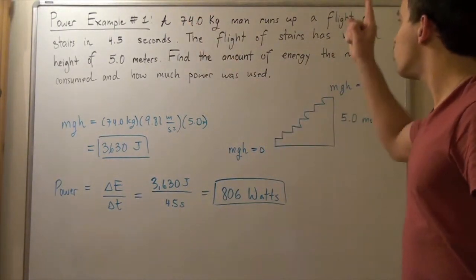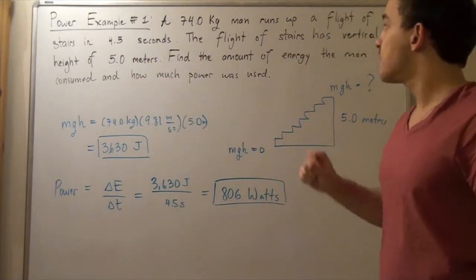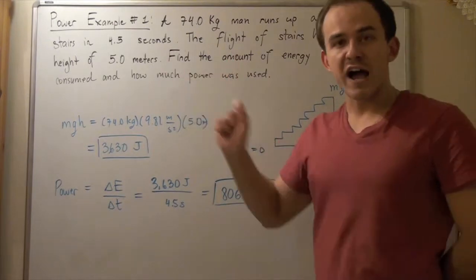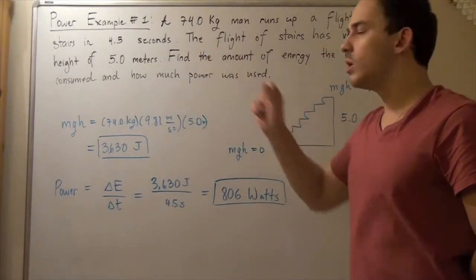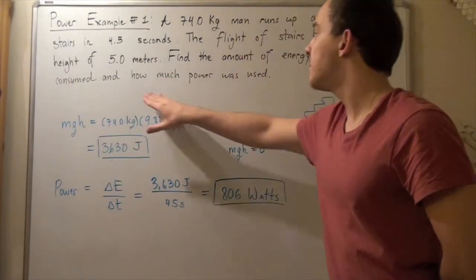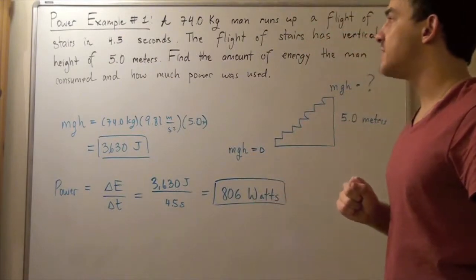A 74-kilogram man runs up a flight of stairs in 4.5 seconds. The flight of stairs has a vertical height of 5.0 meters. We want to find the amount of energy that the man consumed as well as how much power was used in a period of 4.5 seconds.